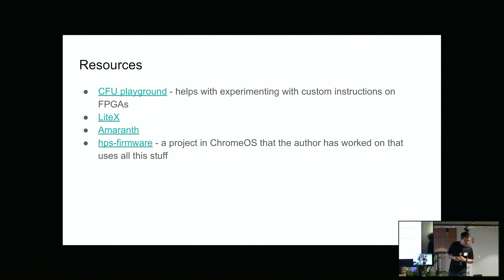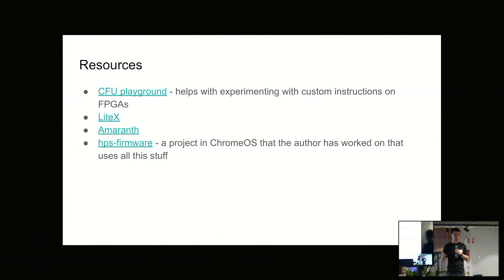The question was about debug print statements — do you just use println or something else? There are a few different options. There's defmt, which is specifically for embedded use and avoids increasing your binary size. Recently I've mostly been using the log crate, which does the formatting on the device — I'm not too constrained for space at the moment. The log crate can have multiple backend outputs, so you can write an implementation for your specific way of getting data off the device.